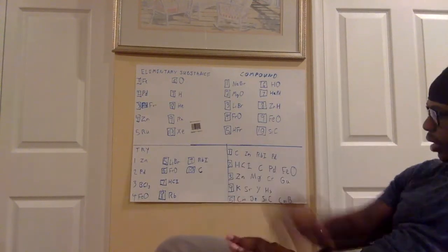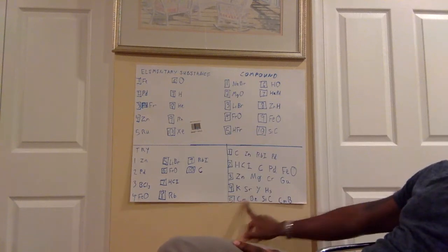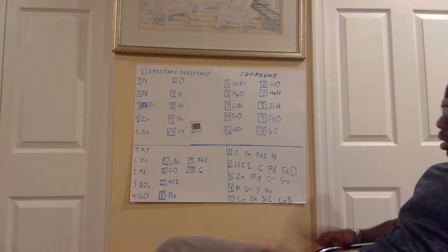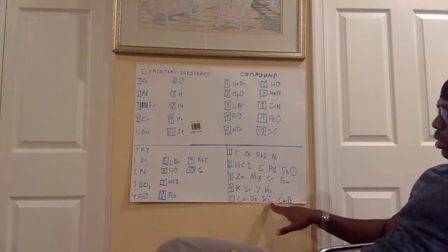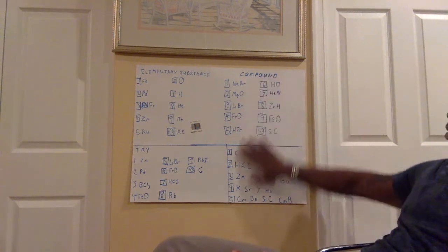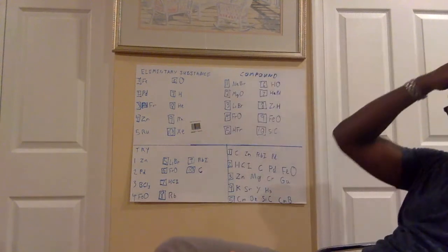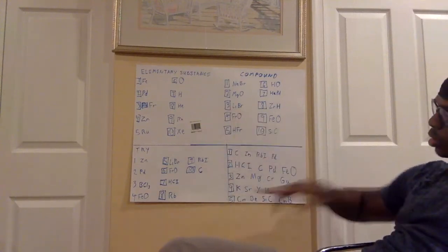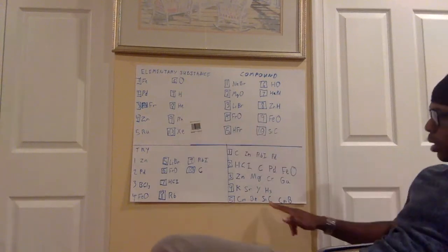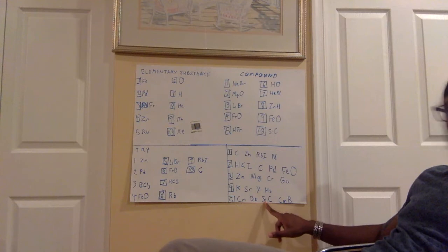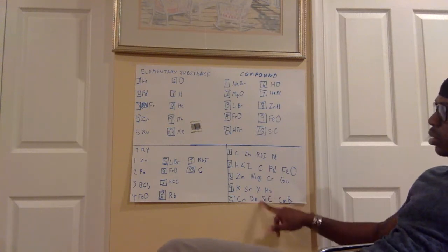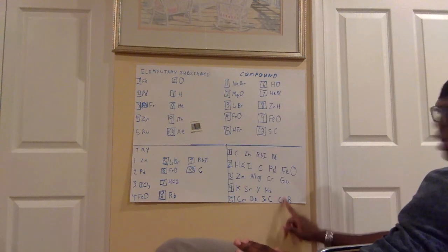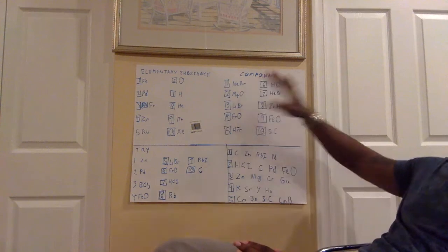And lastly, number five: CmBe, SiC, and CmD. I say SiC and CmD would go under compounds, and Cm and Be would be elementary substances — and yes, I would be correct. Cm is one atom — elementary substance. Be is one atom — elementary substance. SiC: capital S, small i — so Si is one atom — but we have capital C as well, so that's two atoms — compound. And CmD: Cm is one atom, D by itself is another — compound.